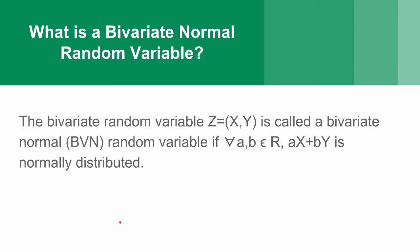What is a bivariate normal random variable? Well, first of all, it is a bivariate random variable, meaning that you have two variables.